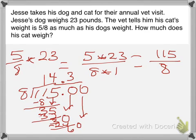60 divided by 8 is 7. 7 times 8 is 56. We subtract. We have 4 left over.